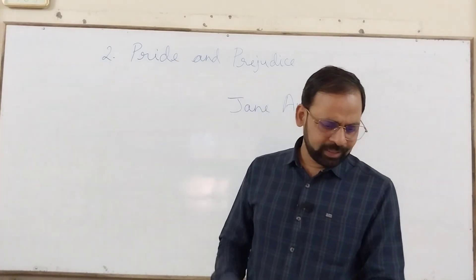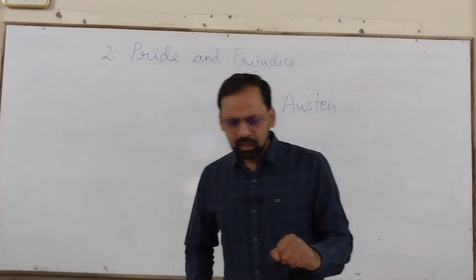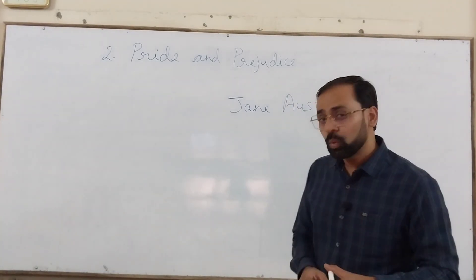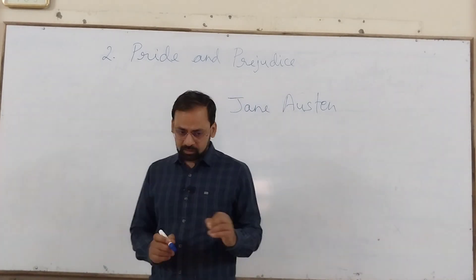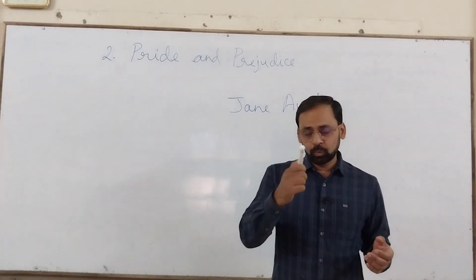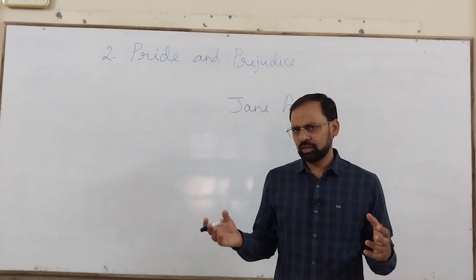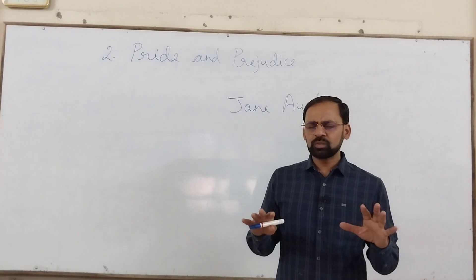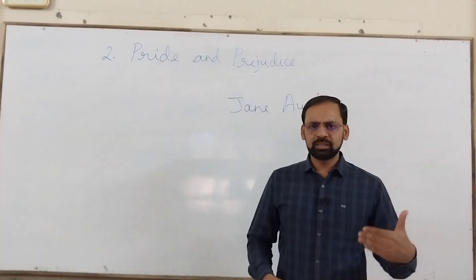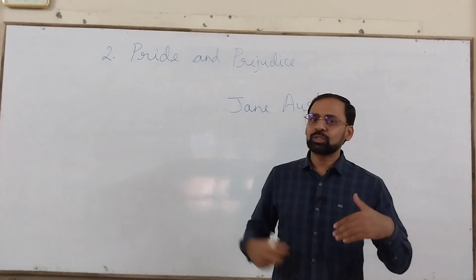She was born in 1775 and lived until 1817, so she lived only 42 years. And in these 42 years, with the help of just six novels, she became so famous. But one interesting fact — she was not very famous when she was alive. When she published those four novels, they were not complete disasters, not total flops; they did some business and were read a bit. But all the popularity and fame that Jane Austen earned came after her death.